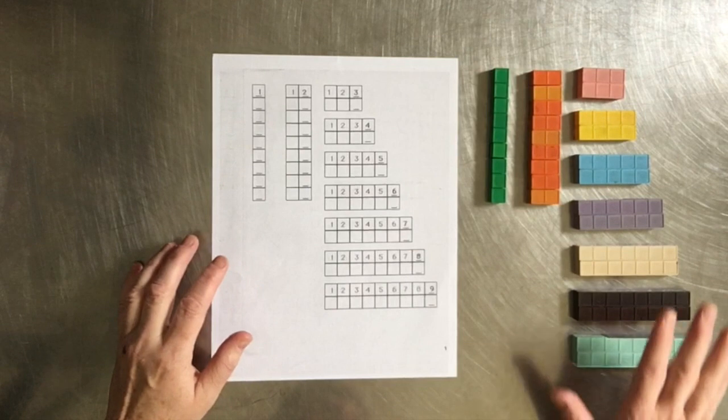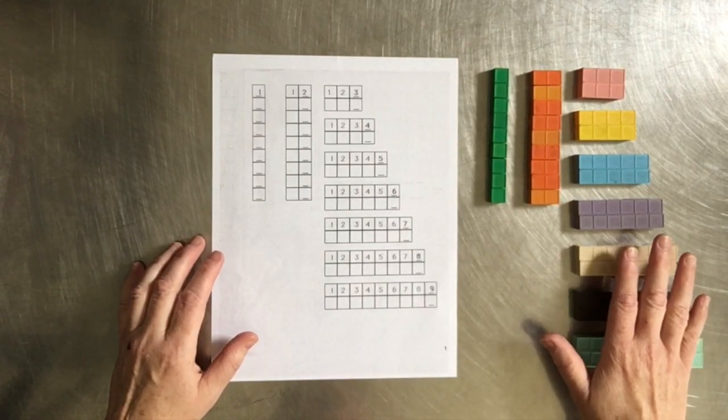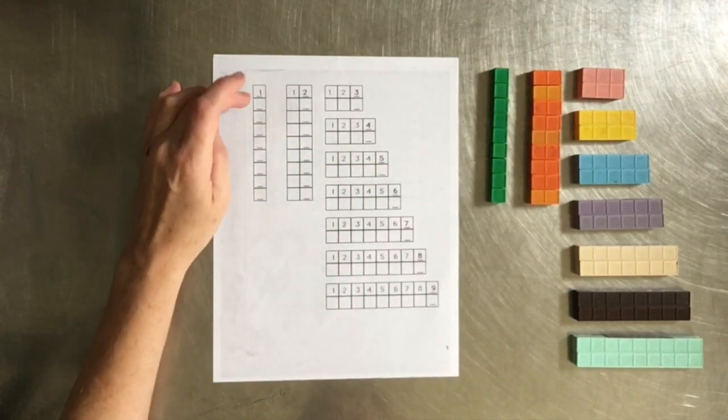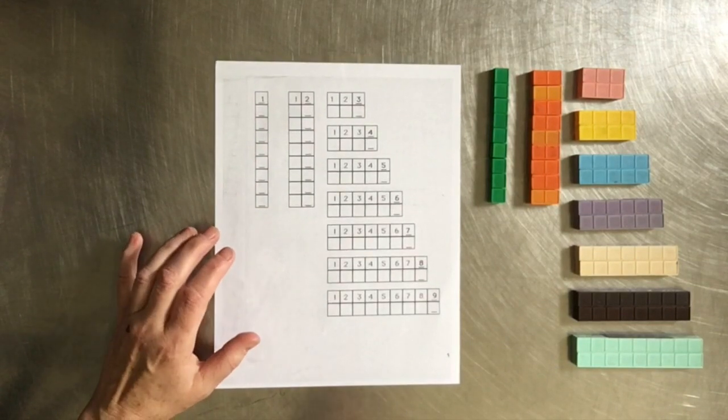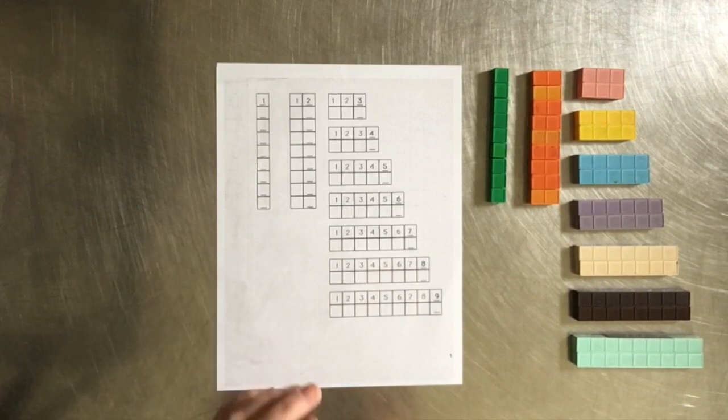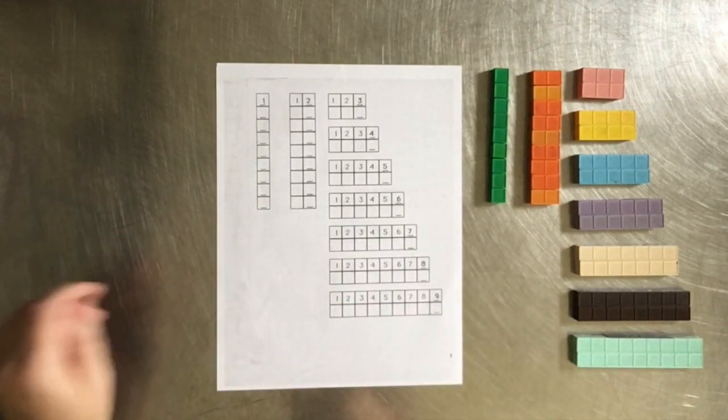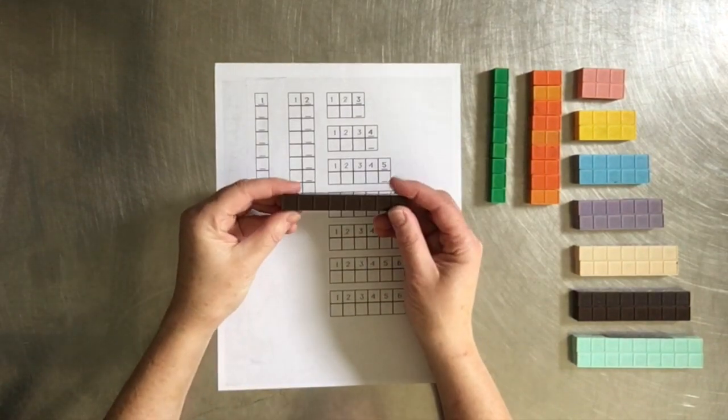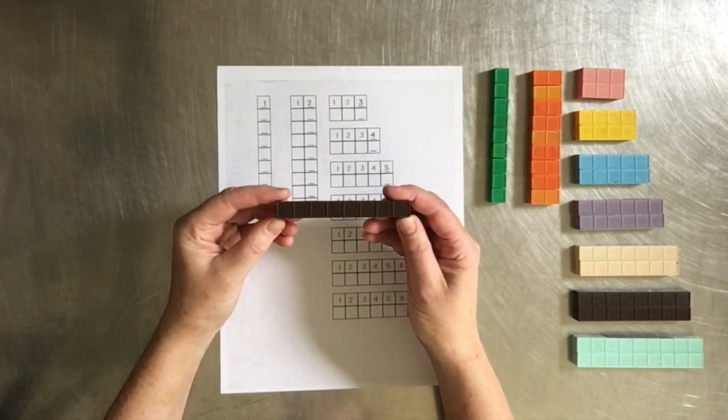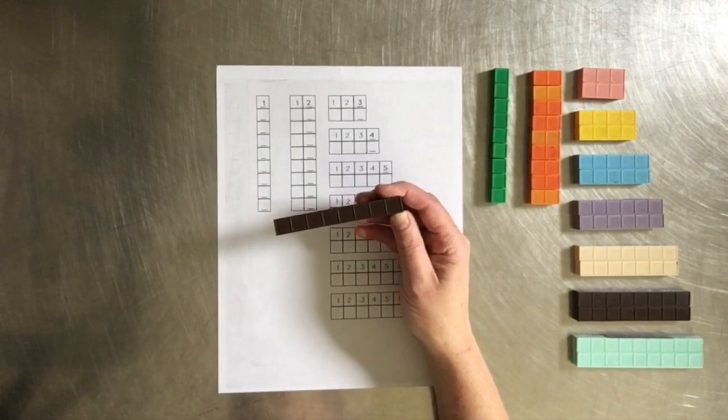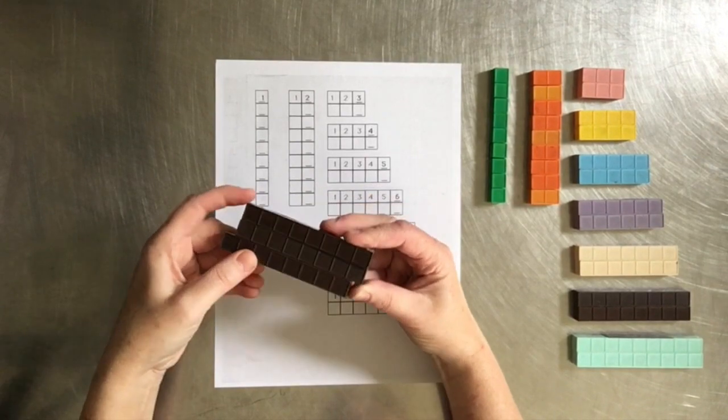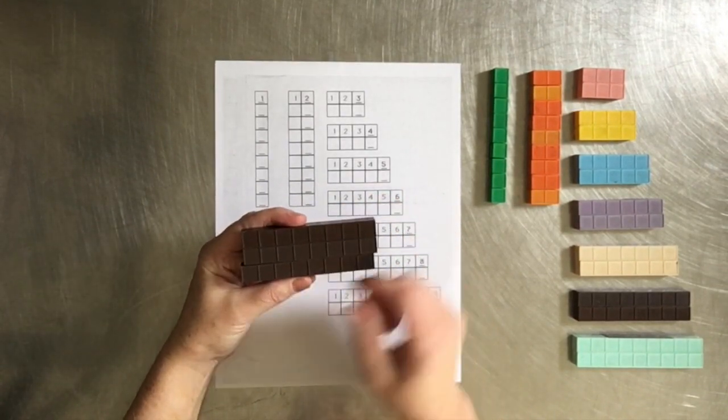So this is our concrete model, representational model of the blocks, and then our abstract symbols. Multiplication is really just a fast way of counting. And so what we are trying to do is instead of counting each individual block. For instance if we have an 8 block here, instead of counting 1, 2, 3, 4, 5, 6, 7, 8, we want to be able to look at that and go that's 8 right. Or just be able to count by 8's. That's 8, and then 16, and then 24.